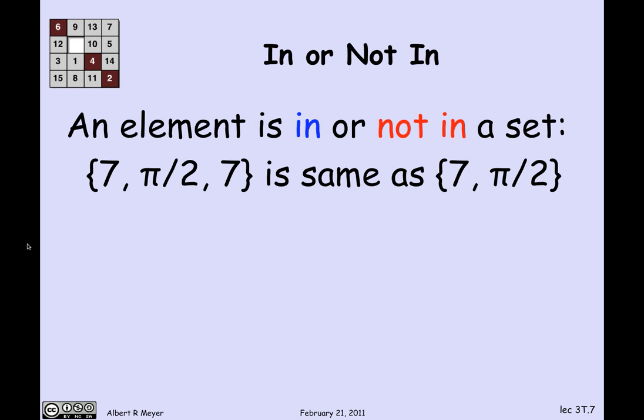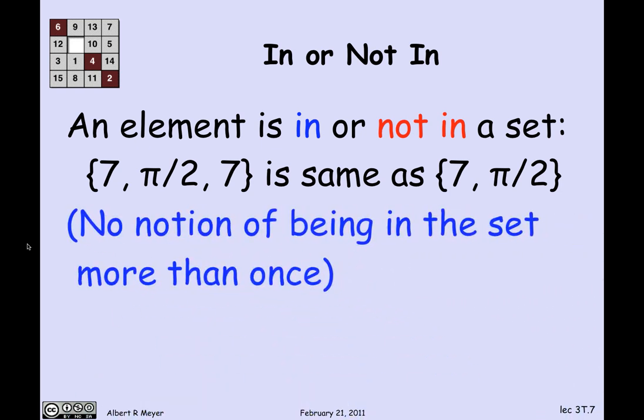Membership has a basic property: an element is either in a set or it's not. If I write a set like {7, π/2, 7}, I'm just telling you the same thing twice — that 7 is in there. This is actually a two-element set {7, π/2}. There is no notion of how many times an element appears in a set. There is a generalization called multi-sets where you can track multiplicity, but we'll stick with standard sets where an element is simply in it or not.